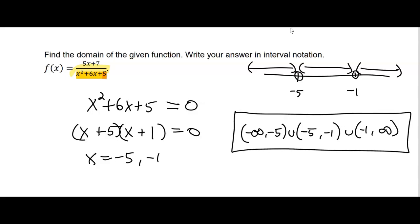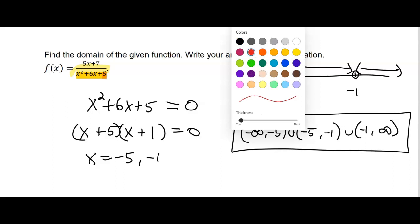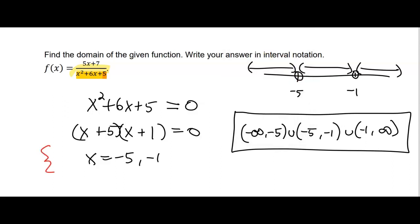That is the interval notation. If you are asked for set builder notation, you can create the set. You can build it right around making that not equal to. That would be set builder or set notation, depending on what you're asked for. In this case, interval notation is great.